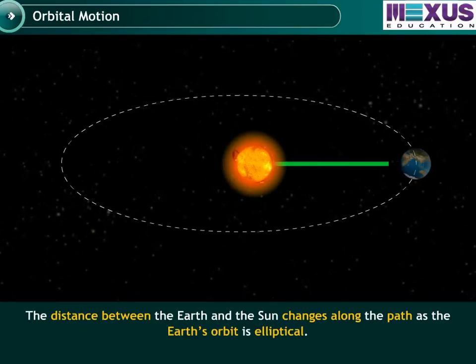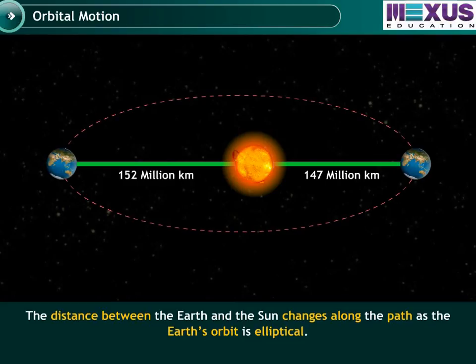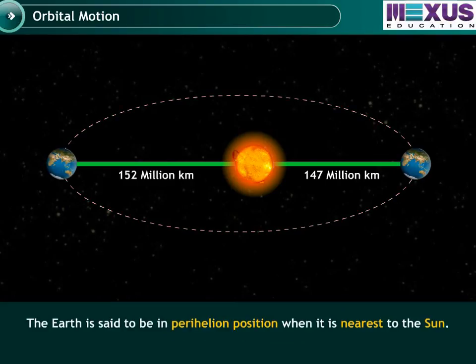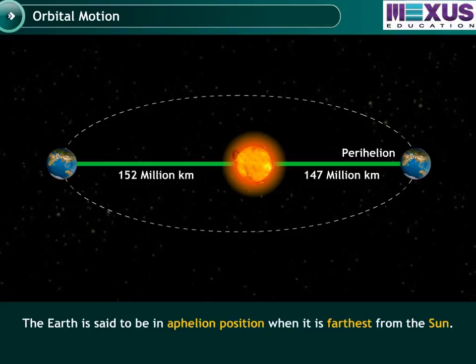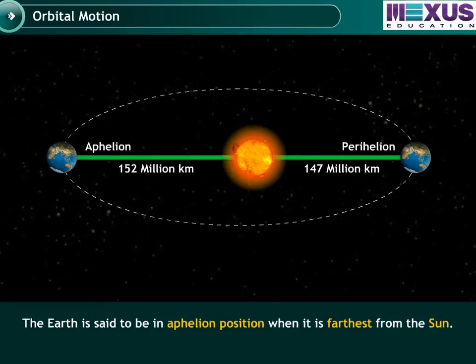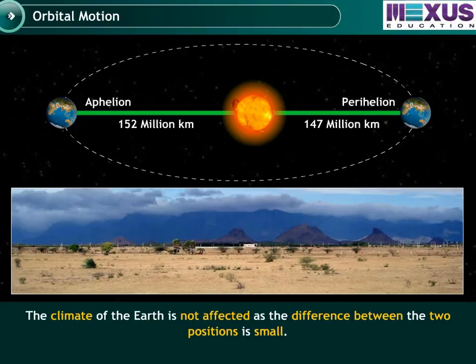The distance between the Earth and the Sun changes along the path as the Earth's orbit is elliptical. The Earth is said to be in perihelion position when it is nearest to the Sun. On the other hand, the Earth is said to be in aphelion position when it is farthest from the Sun. The climate of the Earth is not affected as the difference between the two positions is small.